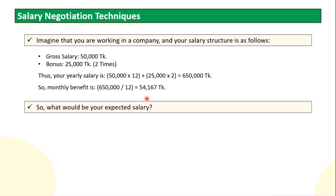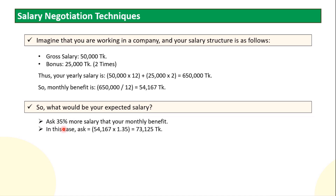You will go to your company and speak about your expected salary. As a general rule, you have to ask 35% more than the monthly benefits — more than 35% and the 35% calculation will be done.